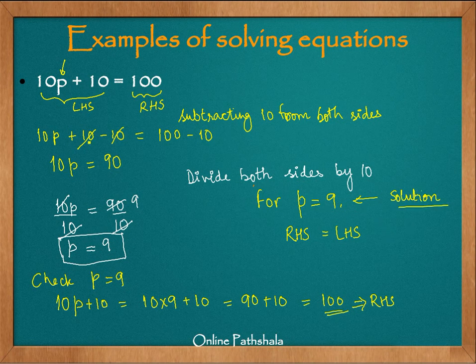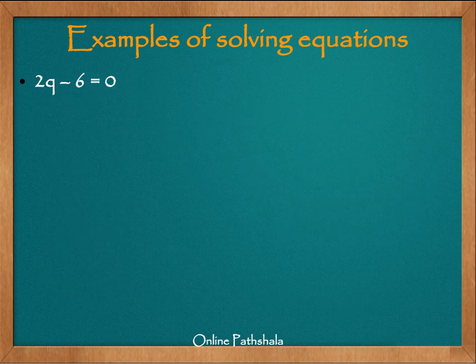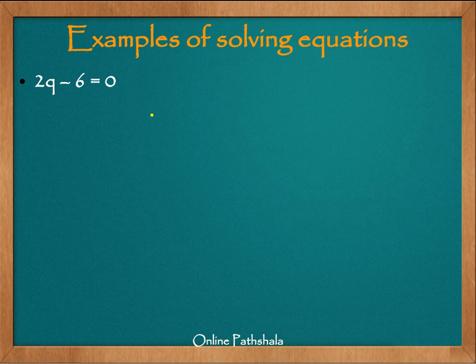Let us look at another example. Now we have 2q minus 6 equals 0. So in this case now we again proceed to isolate this variable to get the solution.